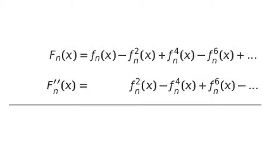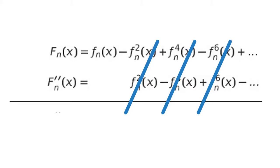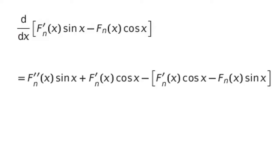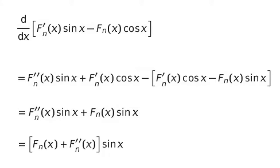Now we are going to create a series — call it big F of x. It consists of the function and its even-numbered derivatives added and subtracted from each other. To that series we add the second derivative of big F of x. When we put it all together, we see that there is a lot of canceling, and the result is simply f of x. So it's a lot of work to end up right back where we started, but this is important work. We then take another combination with the big F functions and find their derivative. When we take that derivative, it simplifies to an expression where the bit in brackets is just f of x — the result of our previous equation.